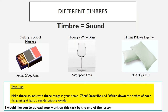A very different timbre could be flicking a wine glass. I've described the timbre of a wine glass as soft, spacious, and echo. Let's have a listen and see if we can hear that kind of timbre. You can hear the wine glass there — it has a very soft, spacious, echo kind of timbre. Very, very different to a box of matches, so you can see how these different timbres have different sounds and effects.